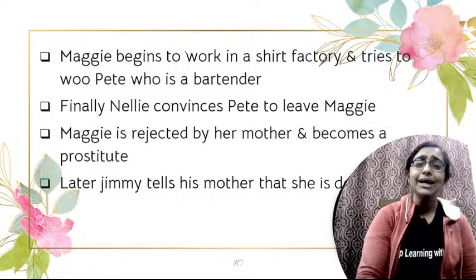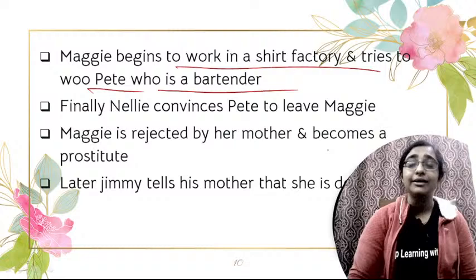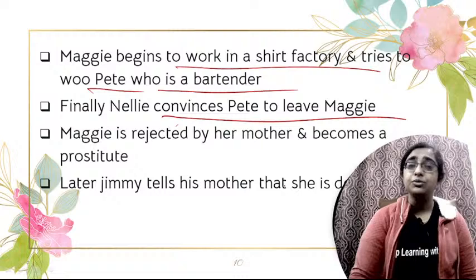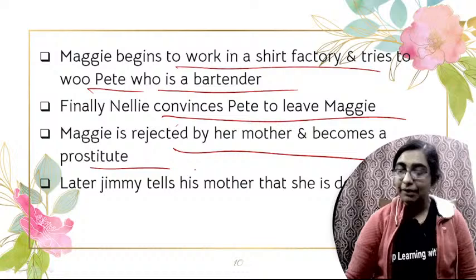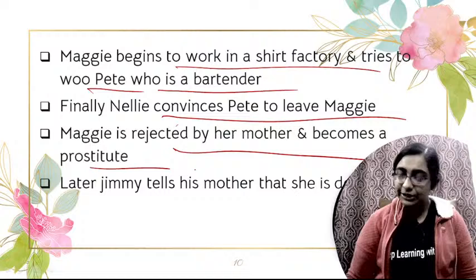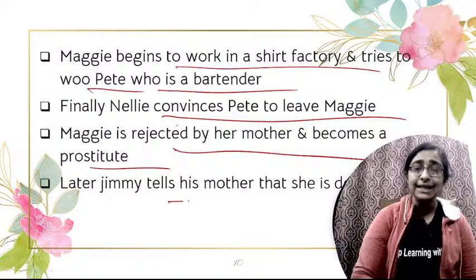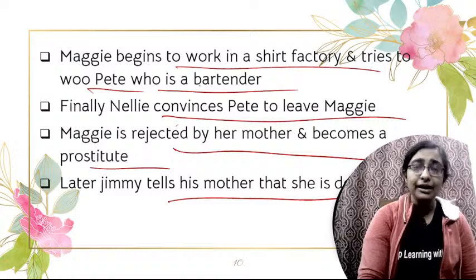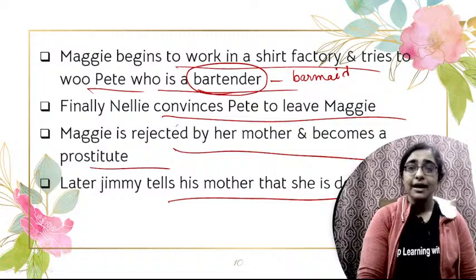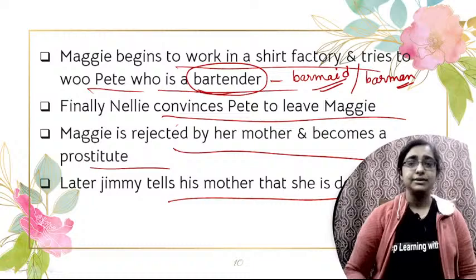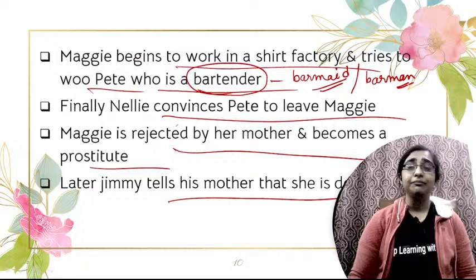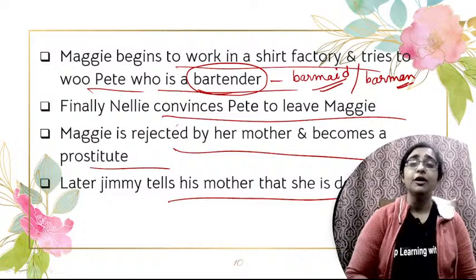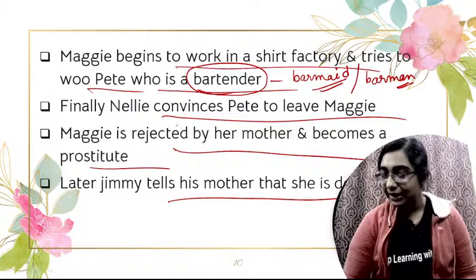Maggie becomes a girl of the streets. Later, Jimmy tells his mother that Maggie is already dead. A bartender means someone who works in a bar. We learn about Maggie's death through the words of Jimmy, who informs his mother that she is already dead.